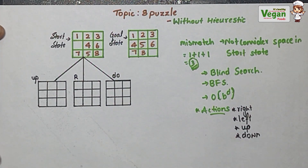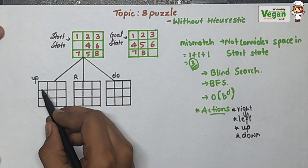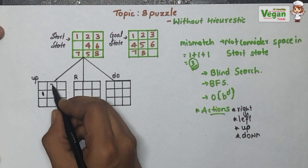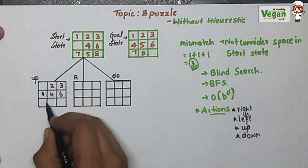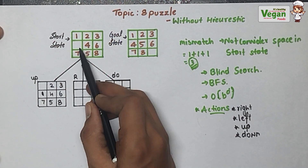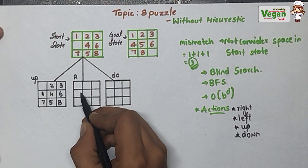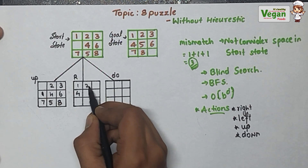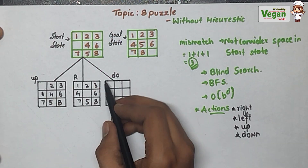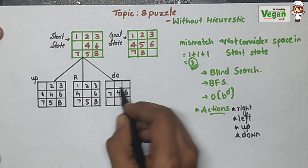If we go upside, the space and 1 will be swapped — 1 will come to the space's position and space will go to 1's place, all other elements remain the same. If we go right, 4 will come to the free space — giving us 1, 2, 3, 6, 7, 5, 8. If we go downside, 7 will be replaced — 7 will come up and all other elements remain the same.